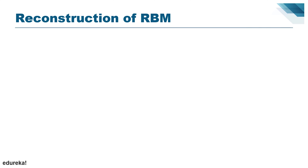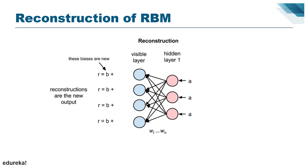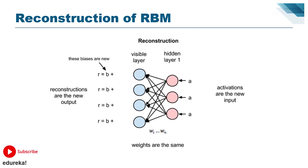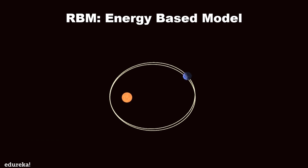In the reconstruction phase, the activations of the hidden layer become the input in a backward pass. They are multiplied by the same weights — one per inter-node edge — just as X was weight-adjusted on the forward pass. The sum of those products is added to a visible layer bias at each visible node, and the output is a reconstruction — an approximation of the original input. Because the weights of the RBM are randomly initialized, the difference between the reconstructions and the original input is often large.